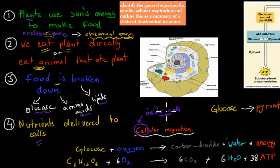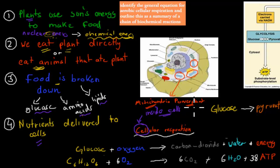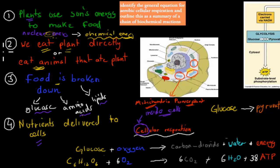We can't directly use the energy from glucose — we need to convert it into different types of energy. This happens in the mitochondria. Every cell has mitochondria, and they're like a power plant. Just as a coal power plant makes electricity out of coal, the mitochondria helps us make energy out of glucose. Inside the mitochondria, we have aerobic cellular respiration, and aerobic just means oxygen is required.